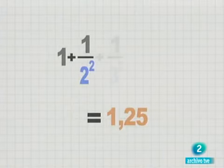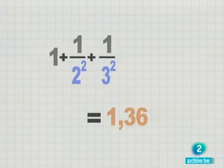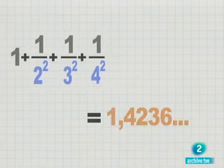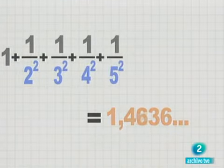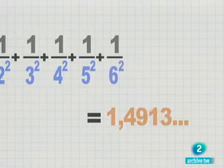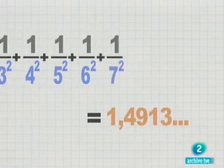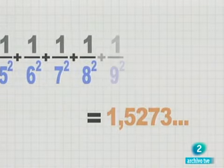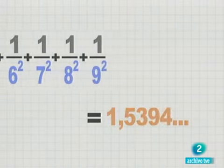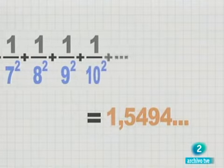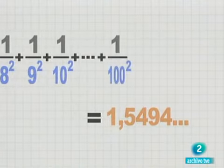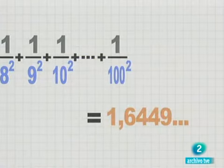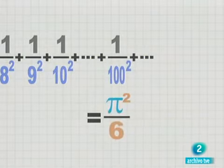¿Qué ocurrirá con esta otra, formada por los inversos de los cuadrados de los números naturales? Euler calculó la suma de los 100 primeros términos hasta encontrar un resultado con más de 20 decimales. Comprobó que se acercaba cada vez más a un número menor que 2, 1,6449. Pero, ¿quién o qué era este número?